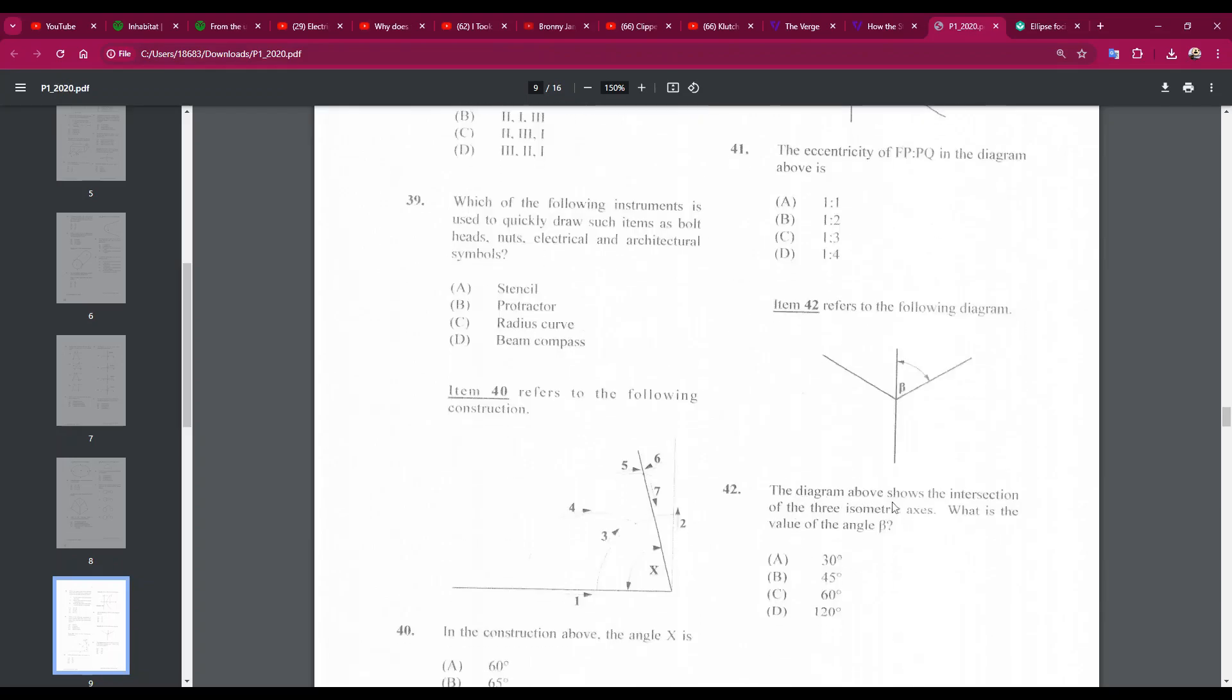Number 42: the diagram above shows the intersection of the three isometric axes. What is the value of this symbol? I think it's beta. And if there were a horizontal line here, then these lines would have receded at 30 degrees. So 30, or 90 minus 30 would leave 60. So the answer is C, 60 degrees.